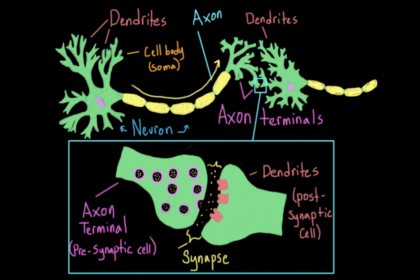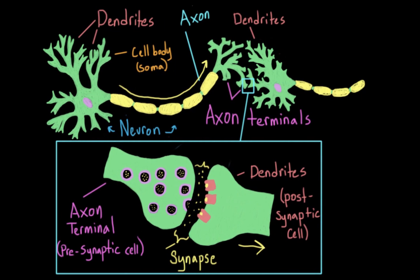Once there, the neurotransmitters bump around and they can dock onto receptors on the next cell. And when they do, this triggers an electrical signal in that next cell. The antidepressants we're going to be talking about today work on this synaptic level, as do many other medications. By increasing or decreasing the amount of available neurotransmitter in the synapse, medications can make it more or less likely that a message will be triggered in the next cell.